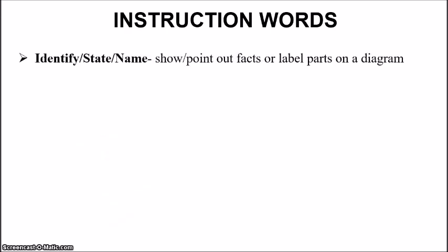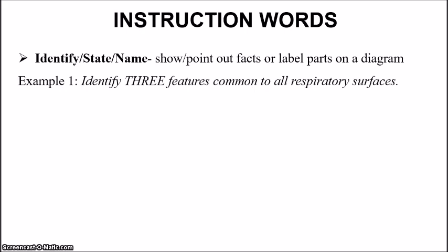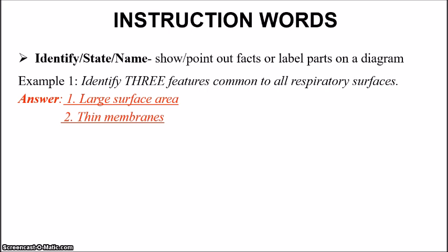The next set of words: identify, state, or name. Basically you'll be showing and pointing out facts or labelling parts on a diagram. For example, 'identify three features common to all respiratory surfaces.' That would include having a large surface area, having thin membranes, and the moisture lining. There's no explanation — you're just identifying the three features, almost similar to listing.